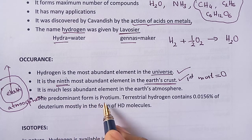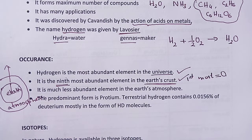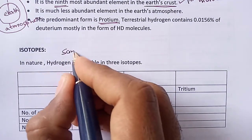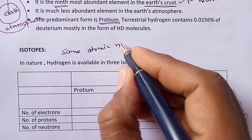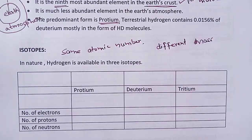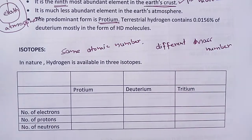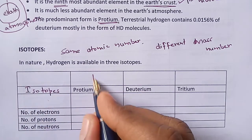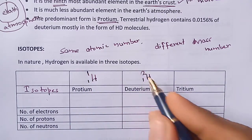The predominant form of hydrogen is protium. Hydrogen has three isotopes: protium (H¹₁), deuterium (H²₁), and tritium (H³₁). Isotopes are atoms of the same element having the same atomic number but different mass numbers.